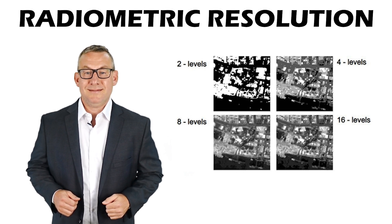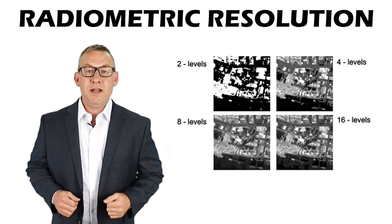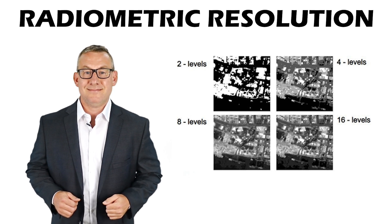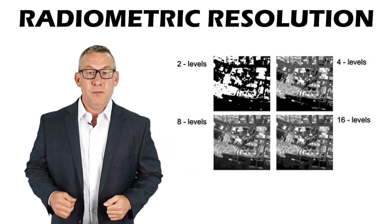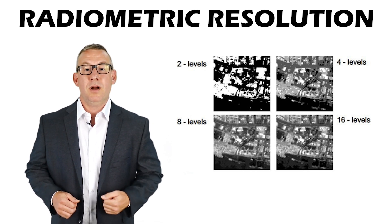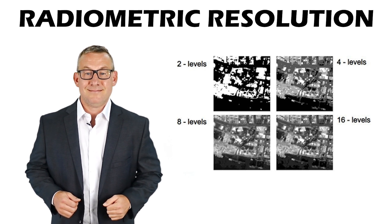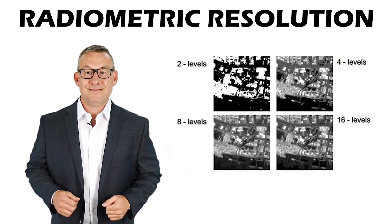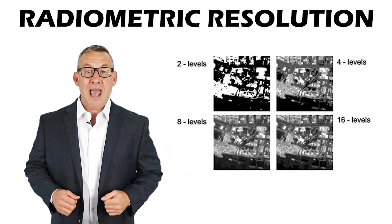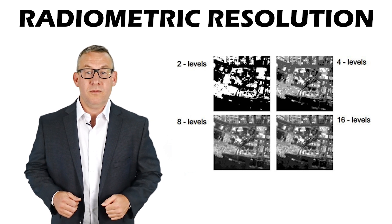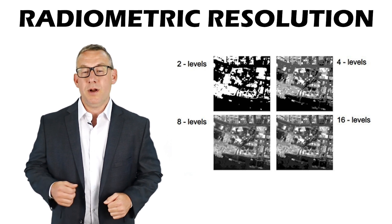Radiometric resolution is the amount of different measurements that a data band can record. Radiometric resolution equals 2 to the power of the number of bits used to record a band of data. 4 bits can store 16 different values. 8 unsigned bits can record 255 different values. 8 signed bits can record values from negative 128 to 127.